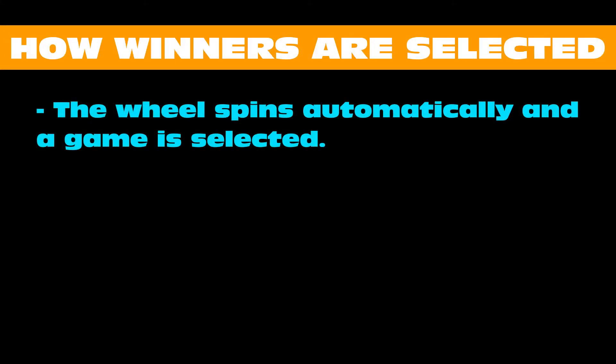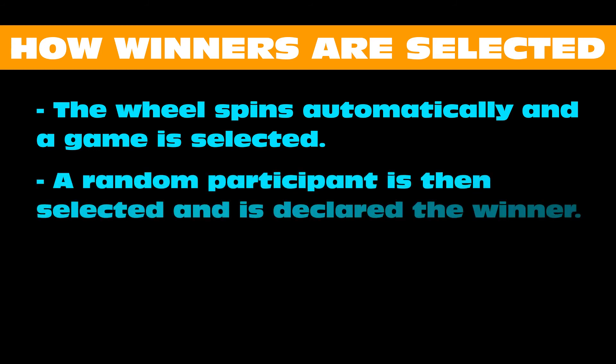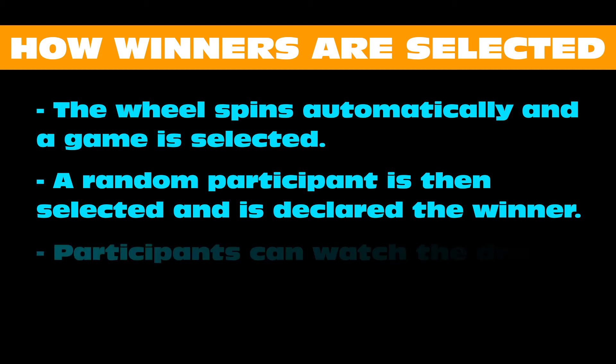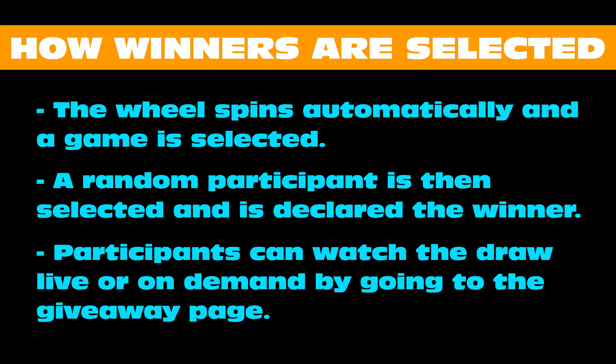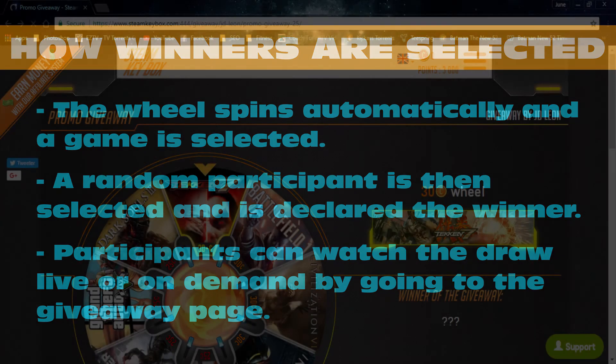The wheel will spin automatically on the date and time set for the draw date. Once the wheel stops spinning, a participant is randomly selected as the winner. Your participants can watch the draw live or on demand after the draw date by simply going to your giveaway page.